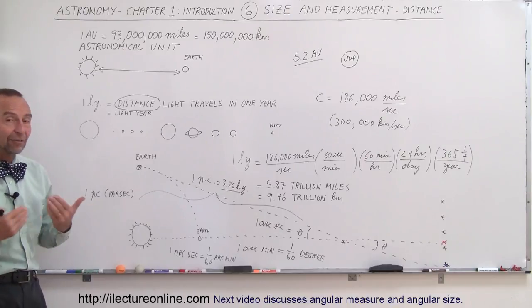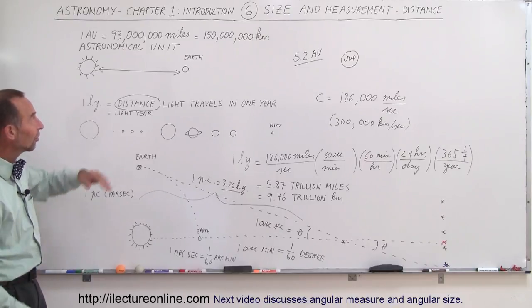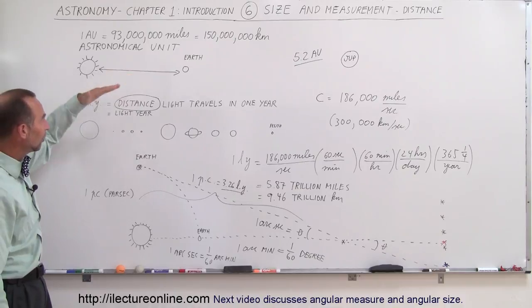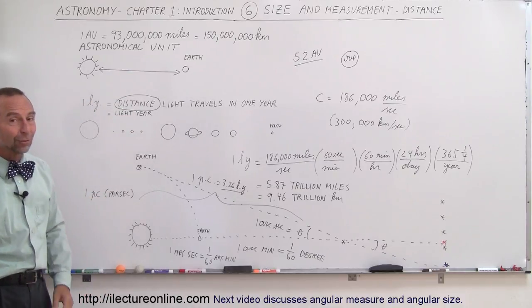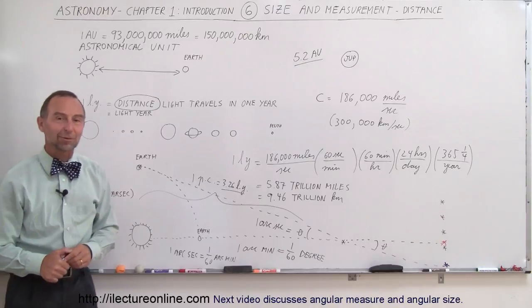So those are the three kinds of measurements that we use in astronomy to measure distance. We have the astronomical unit, we have the light year, and we have the parsec. And you'll see all three of them in typically any astronomy textbook.